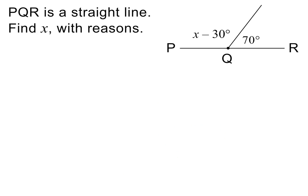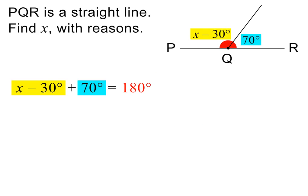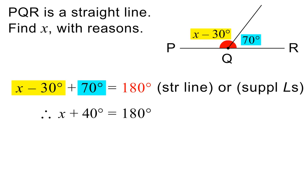Here is the next question. Please pause to read it. Because PQR is a straight line, we can state that the sum of the angles is 180 degrees, and the reason is straight line — or we can also use the reason supplementary angles; both are correct. Minus 30 degrees plus 70 degrees equals 40 degrees, giving us X plus 40 degrees on the left. X is therefore equal to 140 degrees. Please pause to check my working.